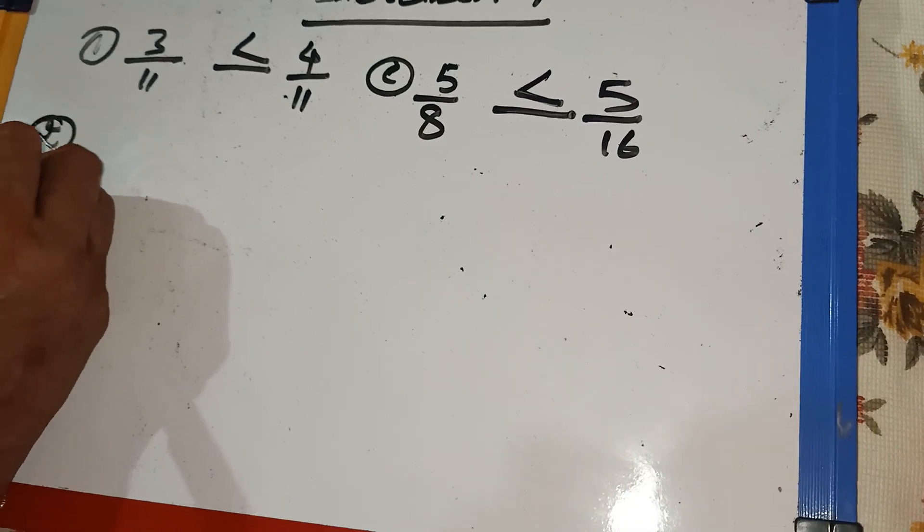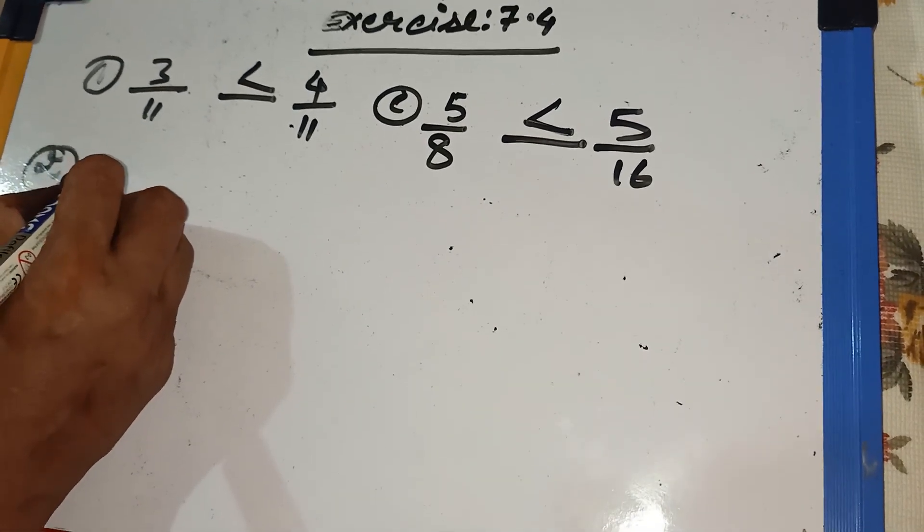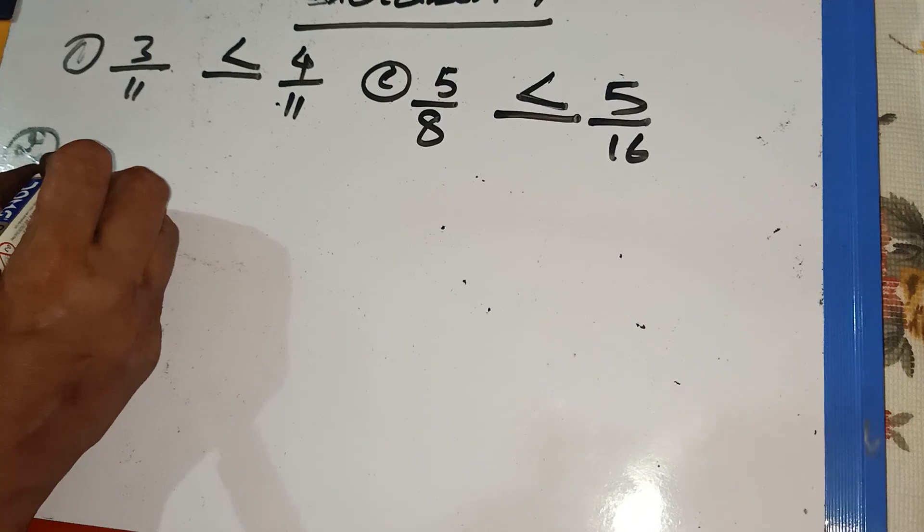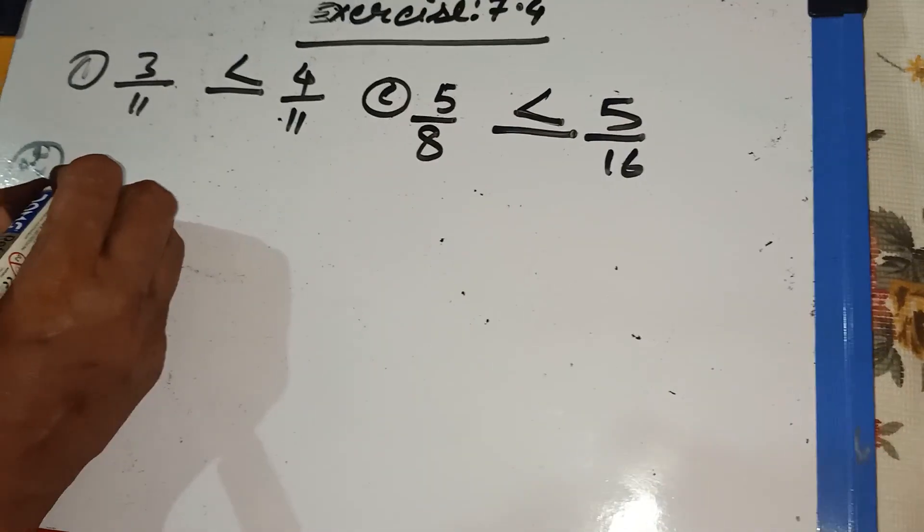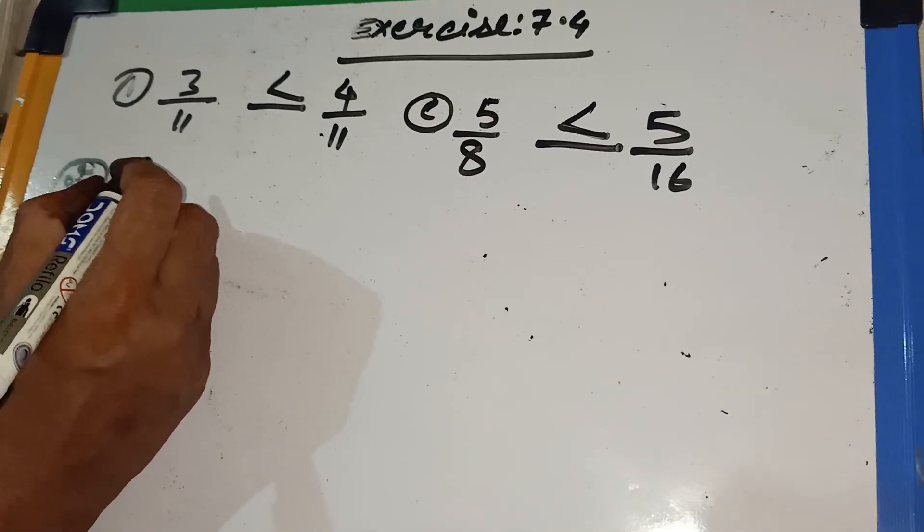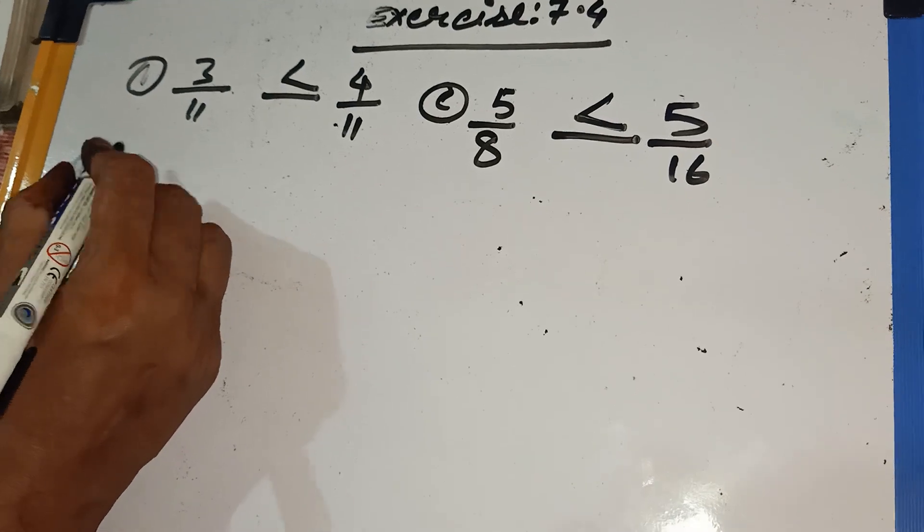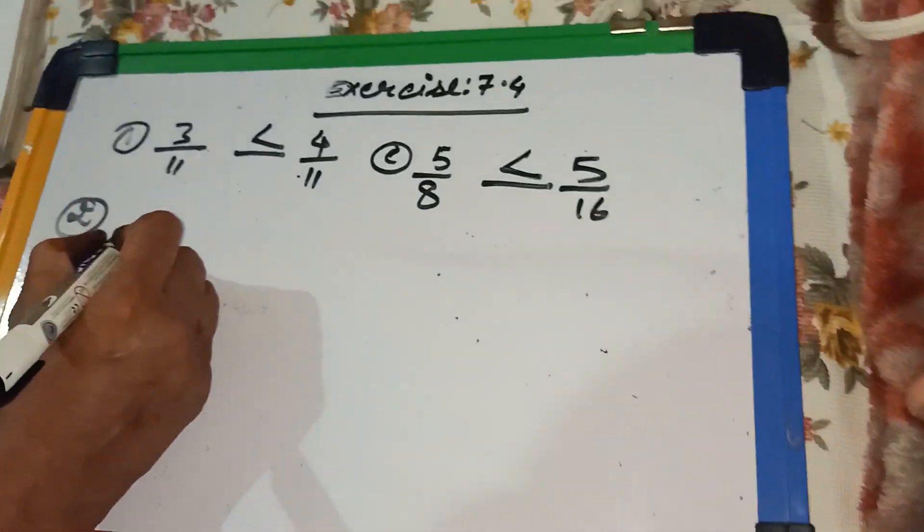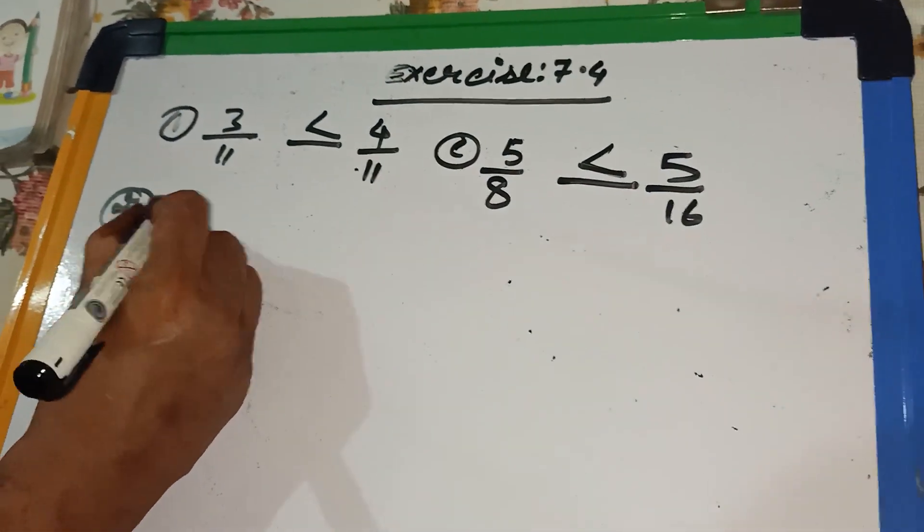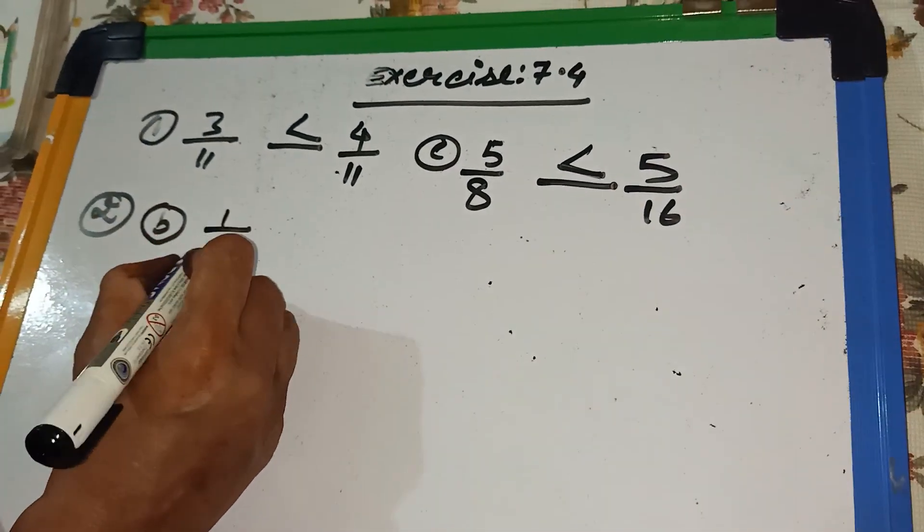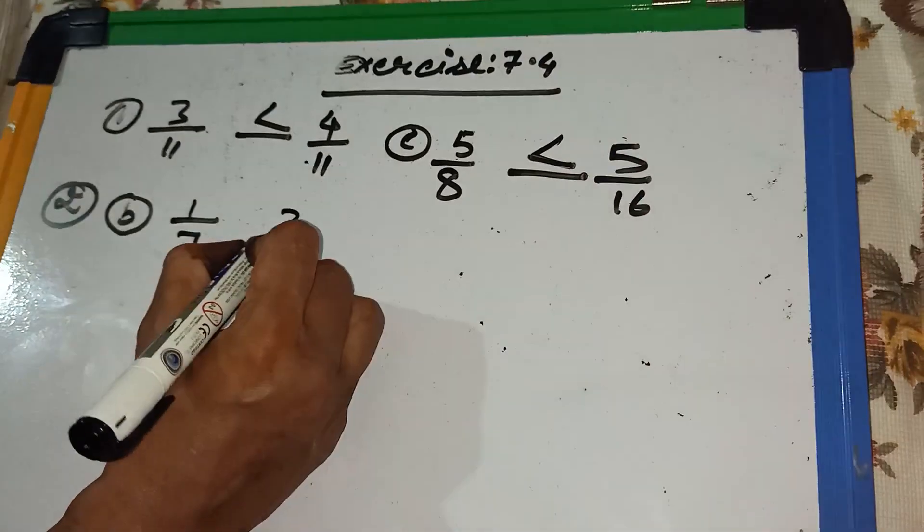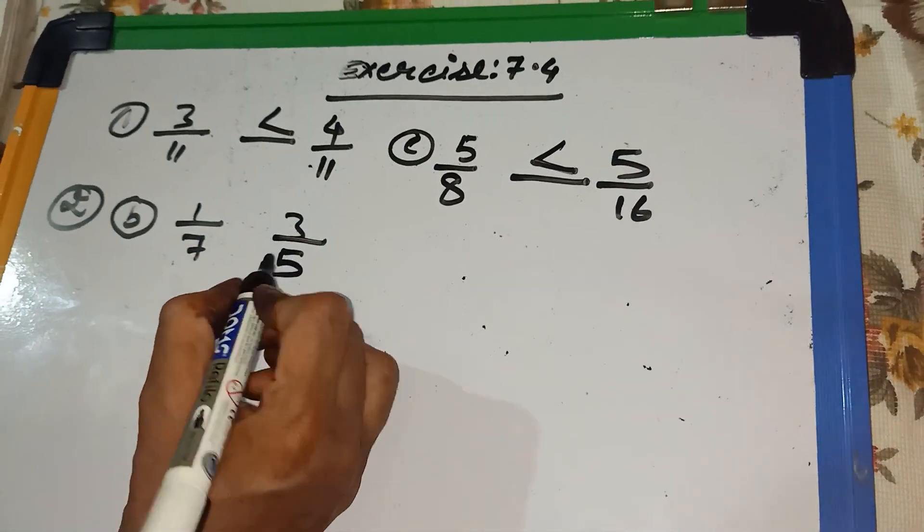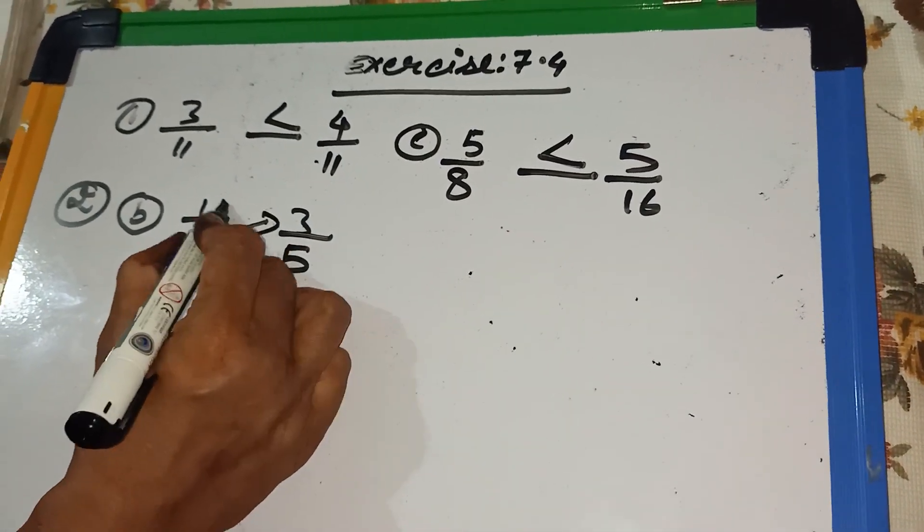Number 2. Number 2 question is, which is the greatest in each of the following pair of the fractions? So, from this question you find out the bigger one. From number 2, I am taking B. 1 by 7 and 3 by 5. From this, you do like that.